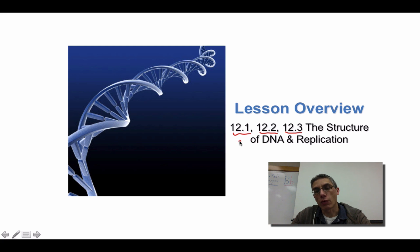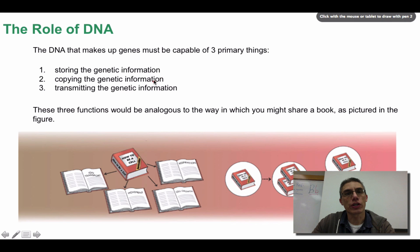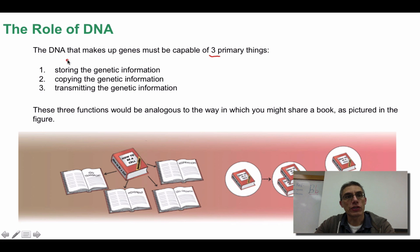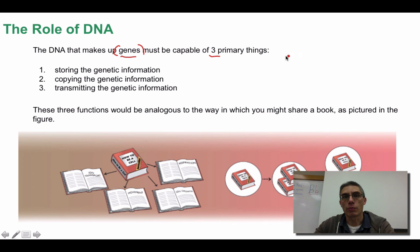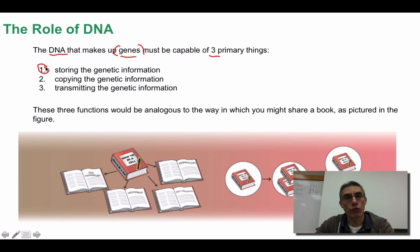I've taken out what I feel are the most important pieces from each of these sections. In this screencast, we're going to focus on the structure of DNA and how that DNA is replicated. Before we can get started talking about structure or replication, we need to understand the roles of DNA, and there are going to be three of those. The DNA that makes up the genes must be capable of three primary things. We've already used the term genes in a previous chapter — in Chapter 11, we talked about genes as being those factors that can be used to transmit information to the next generation. Within those genes, we have a material called DNA, and that DNA is used to store information, to copy information, and to transmit that information to the next generation. Those would be the three roles of DNA.